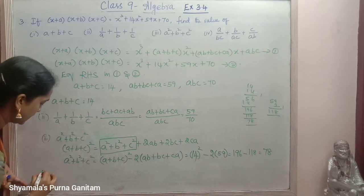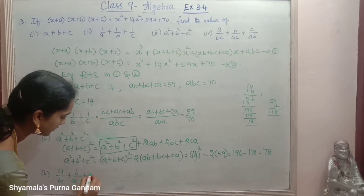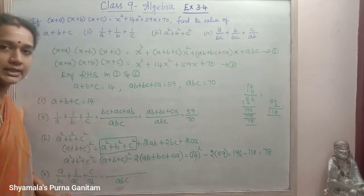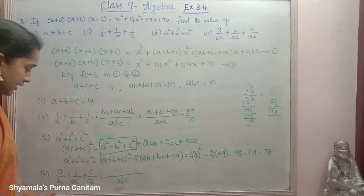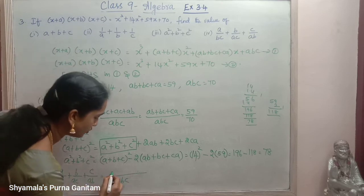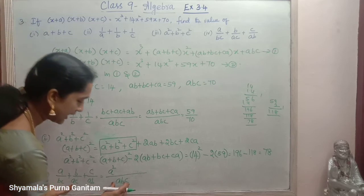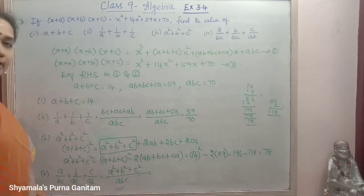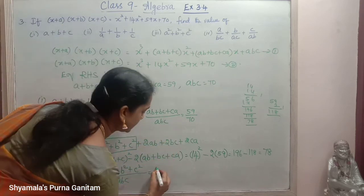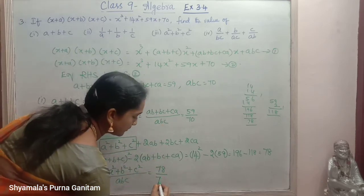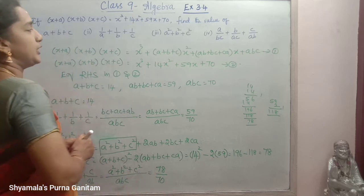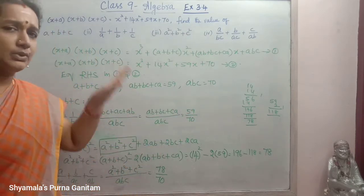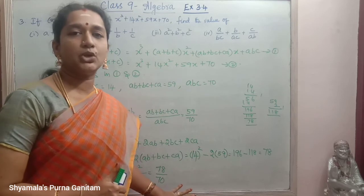The last sub-question: a/bc + b/ac + c/ab. Taking LCM as abc, the numerator becomes a² + b² + c², which we just found to be 78. Divided by abc which is 70. So the answer is 78/70. Since we know the values from identities, we substitute accordingly to get the final answer.